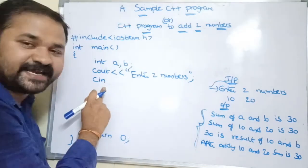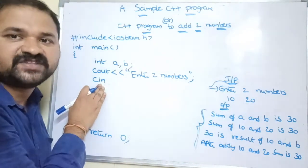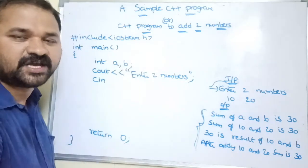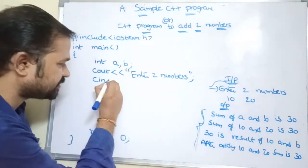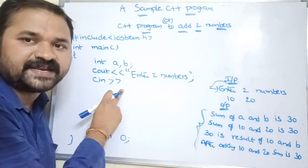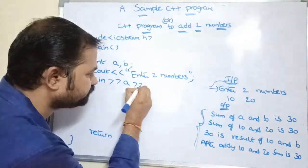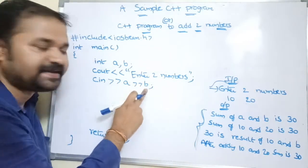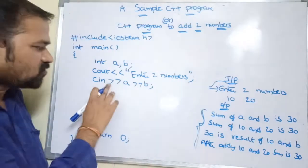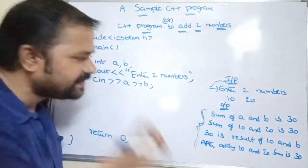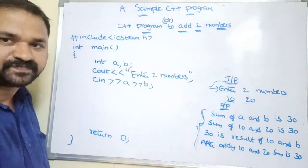To read values, we use the cin object. cin is like the scanf function in C language. cin is an object — with cin we can read a value from the keyboard or from a file. We use the `>>` operator with cin, known as the extraction operator. For example, `cin >> a >> b` reads two values. If there were more variables, we'd add `>> c >> d` and so on. The extraction operator extracts the corresponding value from the keyboard and assigns it to the variable.